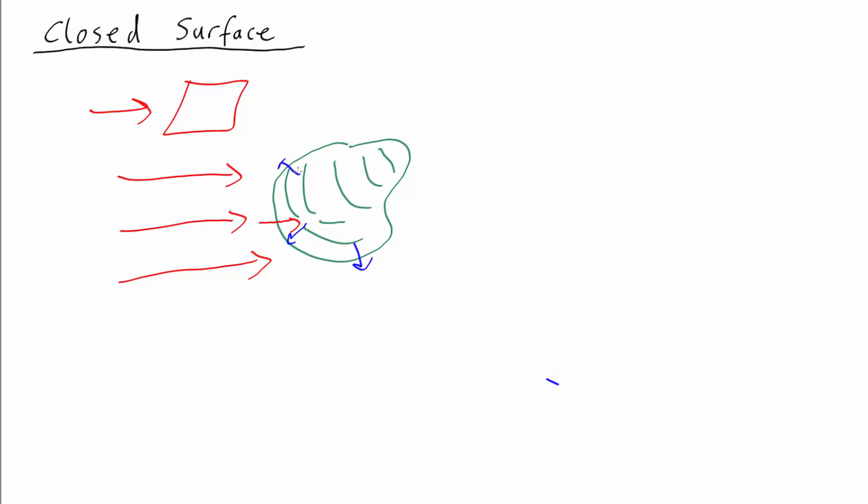In this case, let's count the normals as pointing outwards everywhere. We could also have them counting inwards everywhere if you like. As long as you're consistent, it doesn't matter. So in this case, the normal and the flux are in the opposite direction. So you've got a negative value.